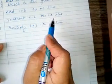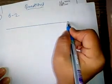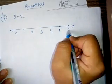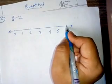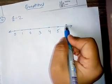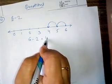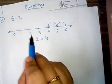The fourth question is: subtract 6 minus 2 on a number line. We draw a number line from 0 to 6. We start with the greatest number, 6, and we jump two positions towards the left hand side. We reach 4. So 6 minus 2 is equal to 4. Remember: on adding we move towards the right, and on subtracting we move towards the left.